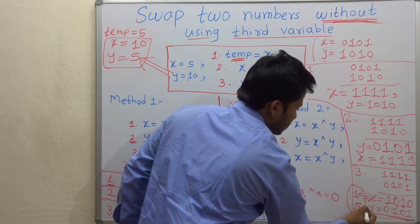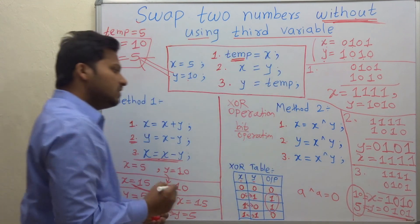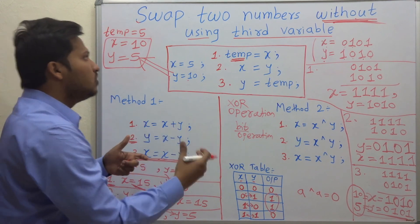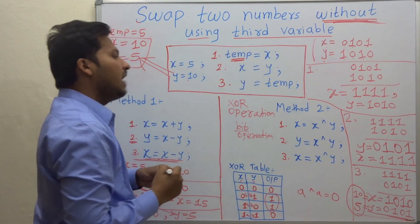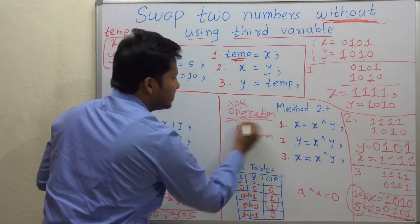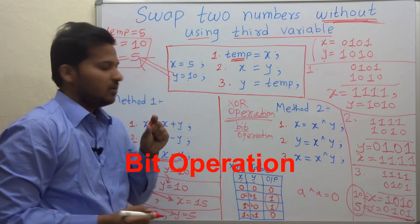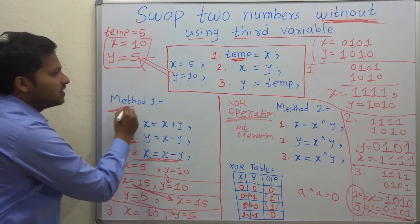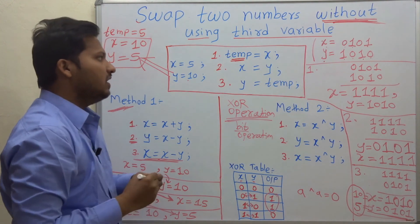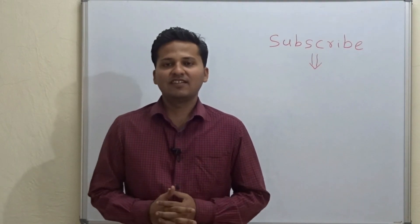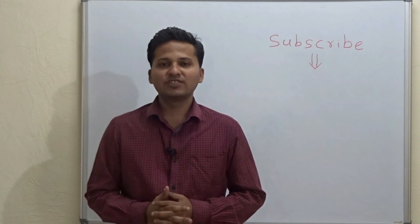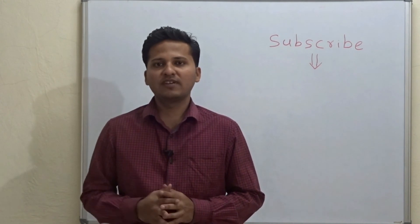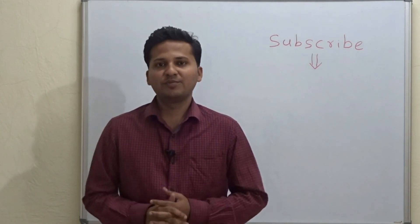As you know, 1010 is 10 and 0101 is 5 — these are the decimal representations. So by using XOR operation we can swap two numbers without using a third variable, and this method works faster because it is a bit operation. Please subscribe to my channel as I post algorithm videos every day, and if you want a video on any particular topic, please mention it in the comments below. Thank you.